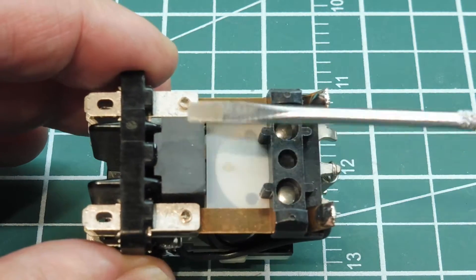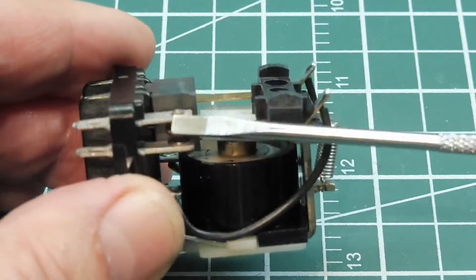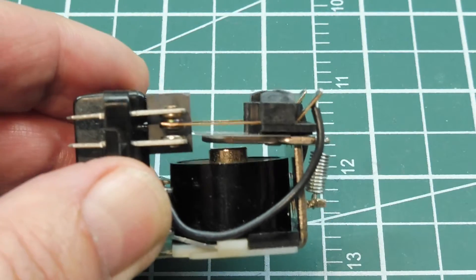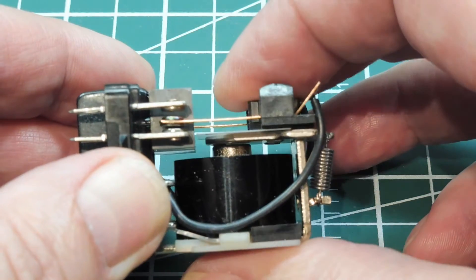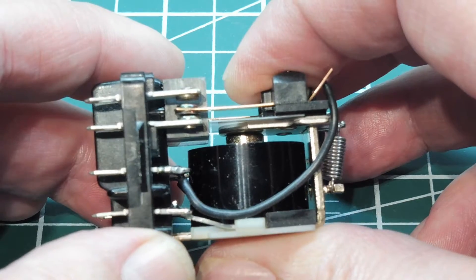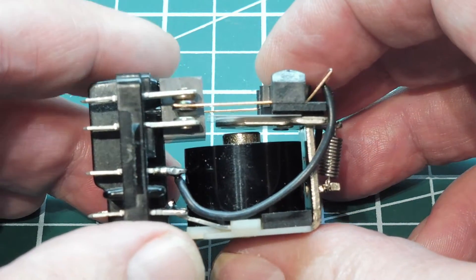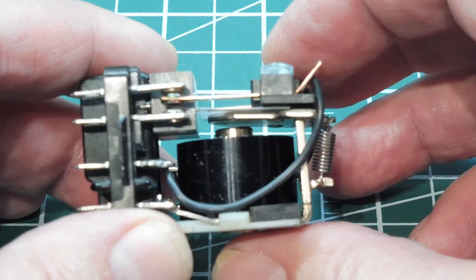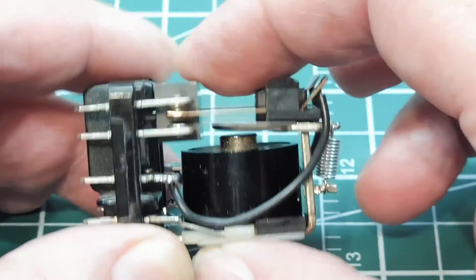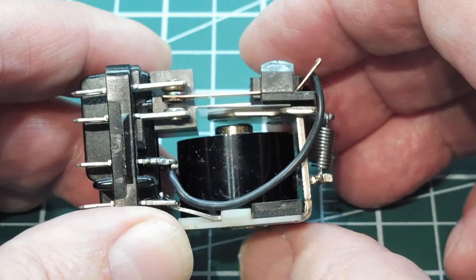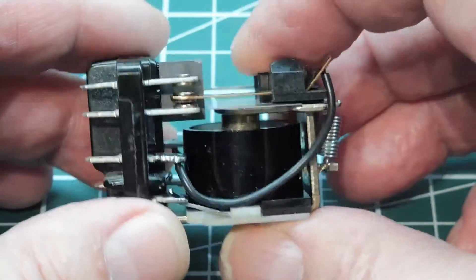And you can see it's very close to the contacts. So when you energize an inductive load, and then de-energize it, and you get that spark, the plasma will respond to the magnetic field of this magnet, and will actually blow out the spark.